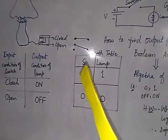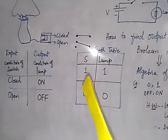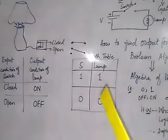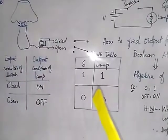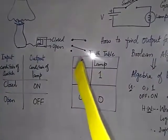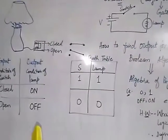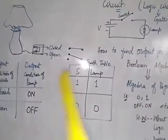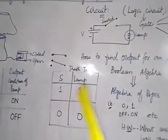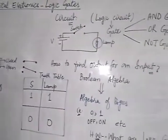If the state of the switch is one or it is closed, being connected to the other point, the state of the lamp is also one. But if the state of the switch is zero, it is not connected, the state of the lamp is also zero — it is off. This table is known as a truth table which gives the truth value, true value or the logic value.